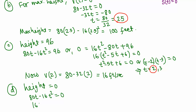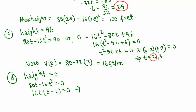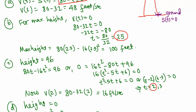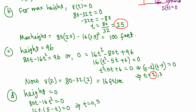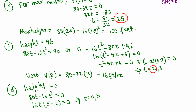Factoring out 16t from 80t minus 16t squared gives 16t times (5 minus t) equals 0. So t equals 0 or t equals 5. t equals 0 makes sense — before the ball was thrown, it was on the ground. t equals 5 also makes sense because it took 2.5 seconds to reach maximum height, and another 2.5 seconds to come back down. So it takes 5 seconds to hit the ground.